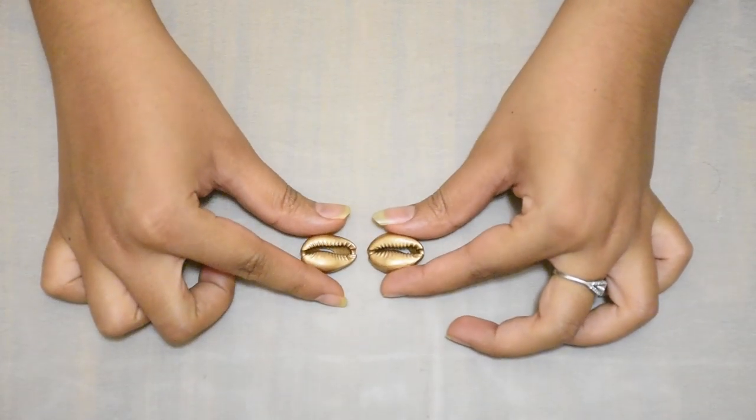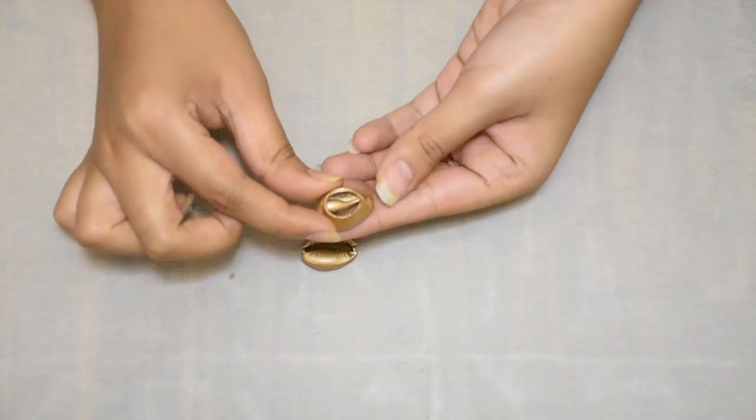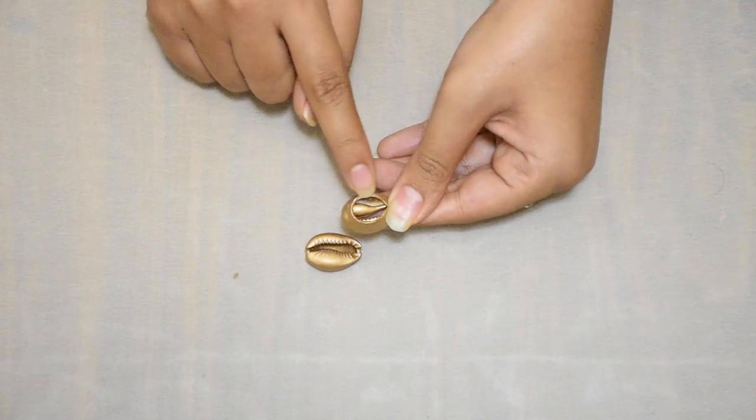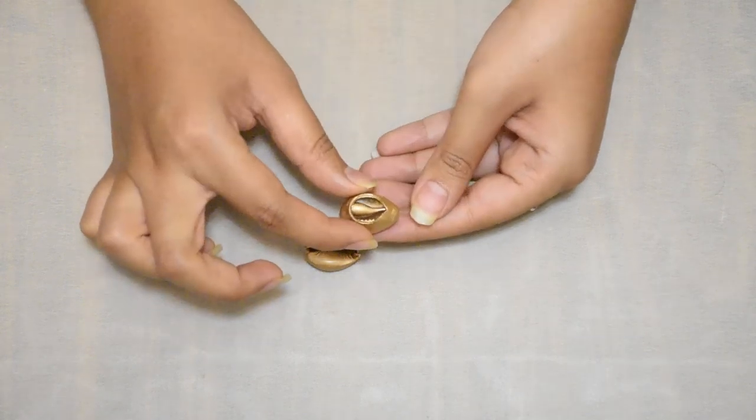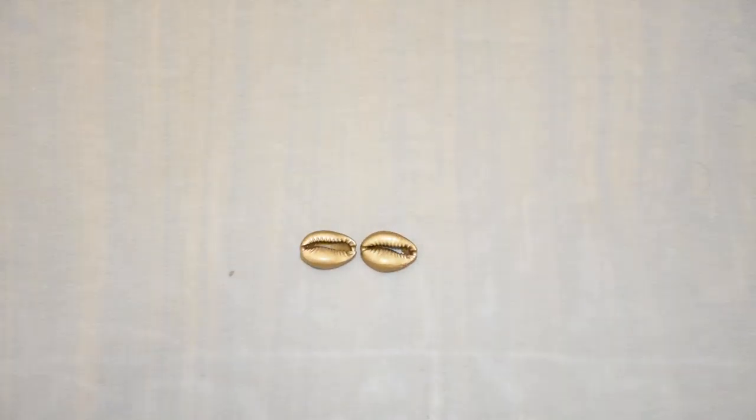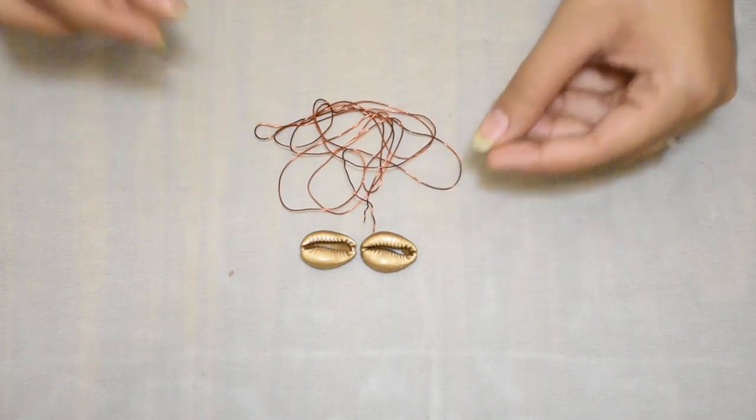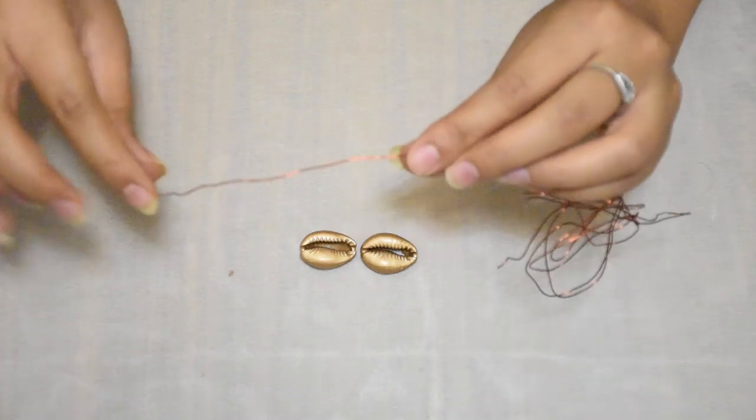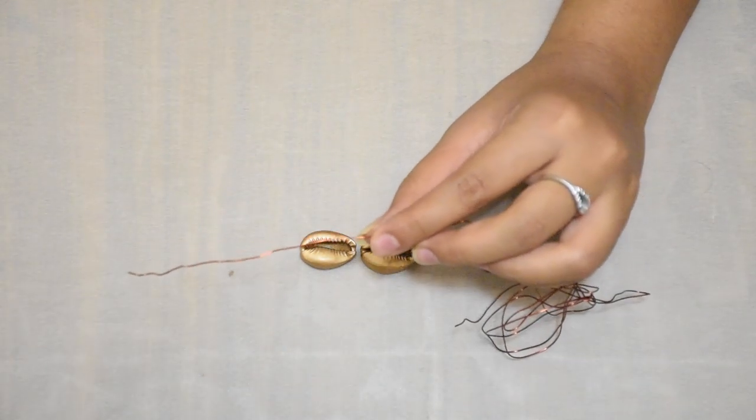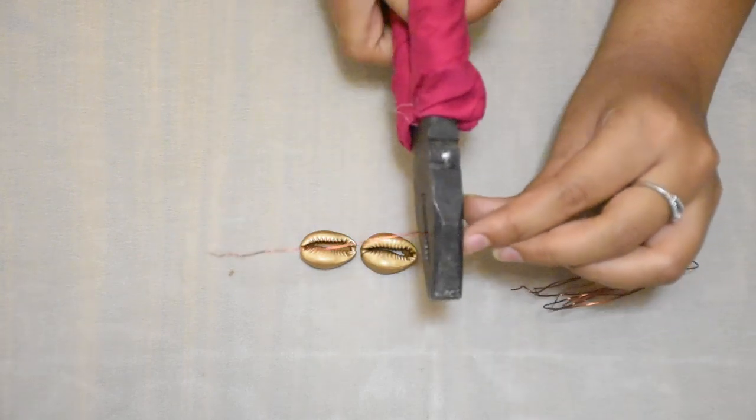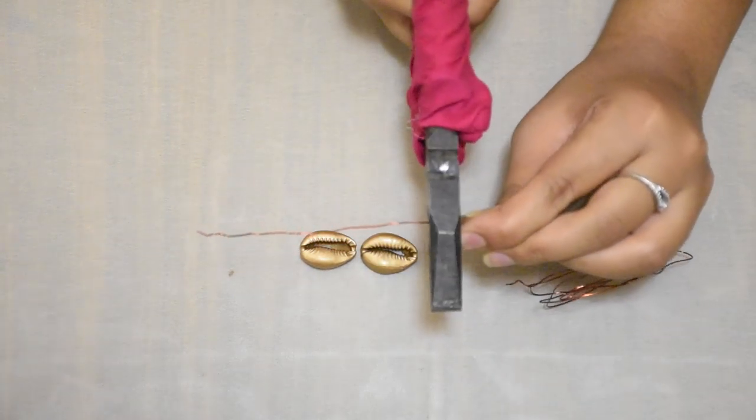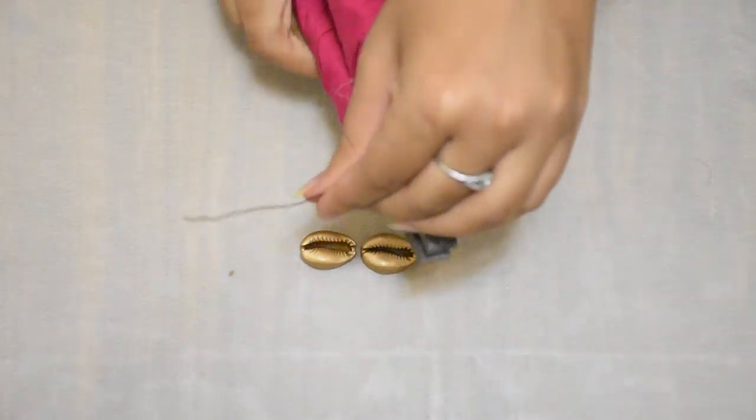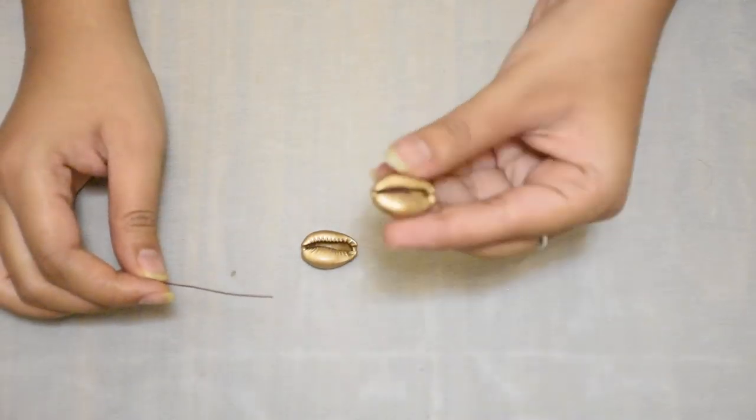To start with, we will take two shells and we will be joining them with a wire. Make sure that your shell has a spacing behind so that we can put the wire inside it. If you take the closed one, it won't help us in the end. Then we will take the copper wire. You take a plier and you can cut it with that. I have been comfortable with pliers for a long time, so I prefer using them.